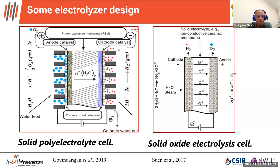A typical electrolyzer design has a solid polymer electrolyte cell. The anode material is where the oxygen evolution reaction occurs, and the cathode layer is where the hydrogen evolution reaction occurs. A certain current drives the splitting of water so that hydrogen can be stored and oxygen is released. The problem with this system is the need to overcome the overpotential for oxygen, since it is a multi-electron process. For this reaction to proceed, we need electricity from renewable energy sources.